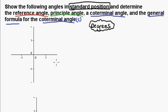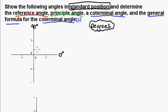When we're starting out in standard position, we always start at this position on the x-axis, which is always 0 degrees. Going counterclockwise: this would be 90 degrees, then 180 degrees, then 270 degrees at the bottom, and 360 and so on.